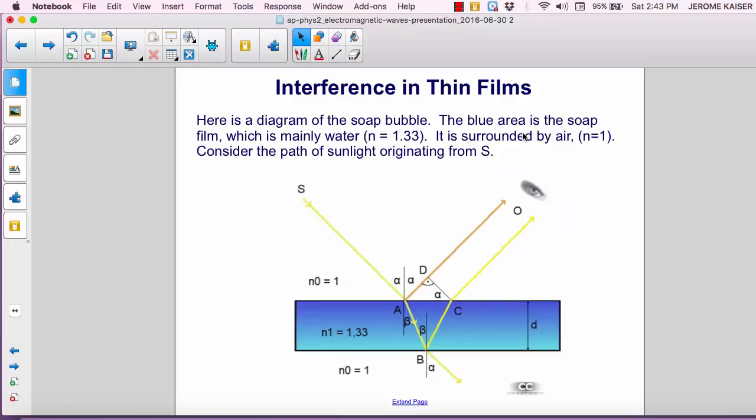Here's how interference works in thin films. Below you'll see a diagram of the soap bubble. The blue area is the soap film, which is mainly composed of water, and so we're going to use an index of refraction of 1.33.